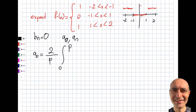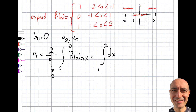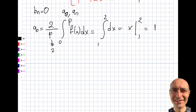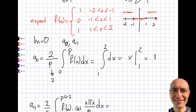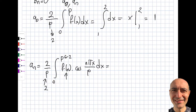For a_0: using the formula (2/p) · integral from 0 to p of f(x) dx, with p = 2. The piece from 0 to 1 is zero, so I only integrate from 1 to 2 where f(x) = 1. That gives a_0 = (2/2) · [x] from 1 to 2 = 2 - 1 = 1.